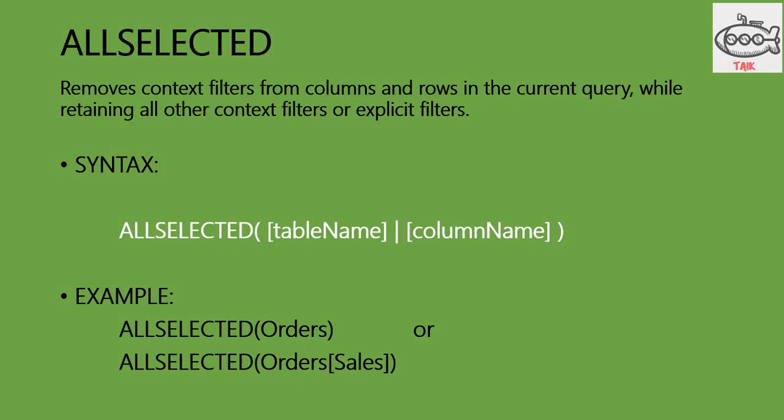The next one is ALLSELECTED. This removes context filters from columns and rows in the current query while retaining all other context filters. It will return values only for the items which are selected in that slicer. For ALLSELECTED, you need to put either the table name or the column name.